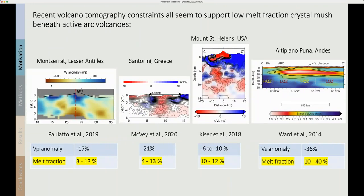More recent volcano tomography constraints all seem to support low-melt fraction crystal mush beneath active volcanoes. For example, I've worked on Montserrat in the Lesser Antilles and there the Vp anomaly is minus 17 percent corresponding to a melt fraction of 3 to 13 percent. At Santorini, the velocity anomaly is minus 21 percent corresponding to a 4 to 13 percent melt fraction. The recent results from Mount Saint Helens from the iMUSH experiment showed that the Vp anomaly is minus 6 to minus 10 percent corresponding to a 10 to 12 percent melt fraction. And finally the stunning results from Altiplano-Puna and Volcan Uturuncu show the Vs anomaly of minus 36 percent corresponding to a melt fraction of 10 to 40 percent.